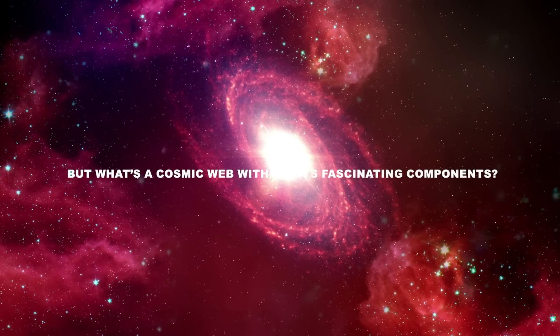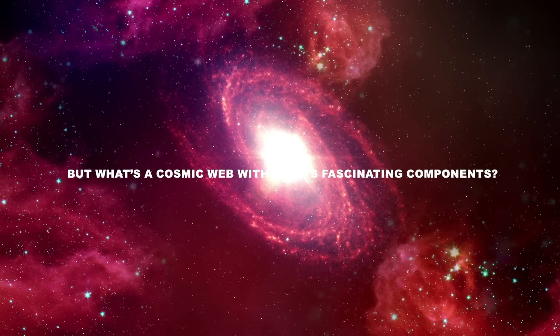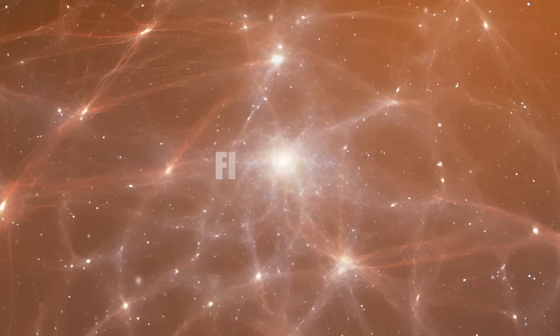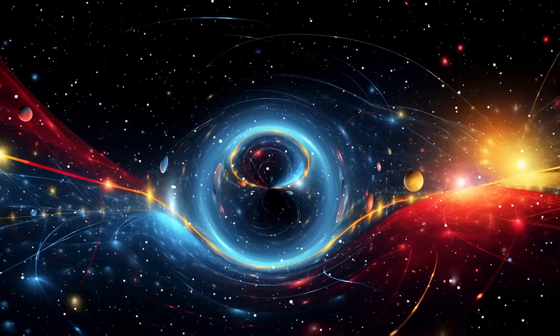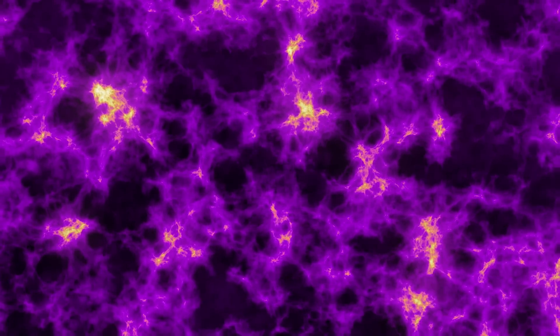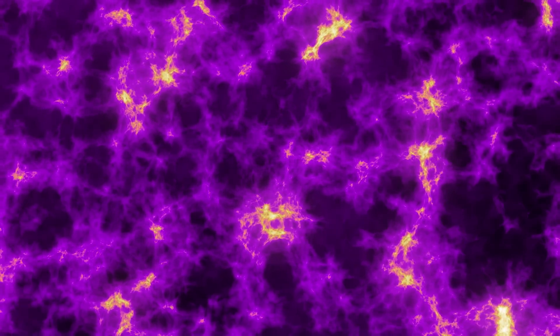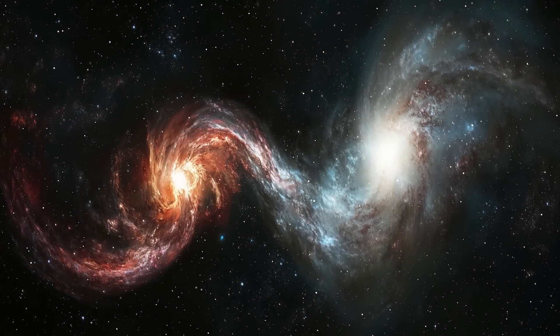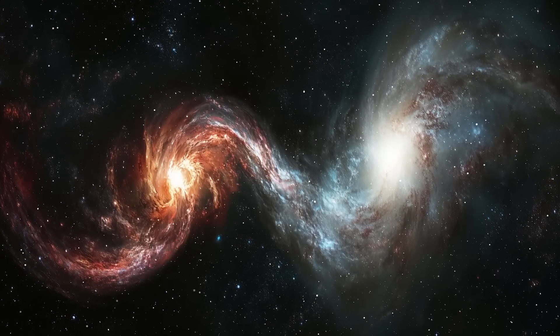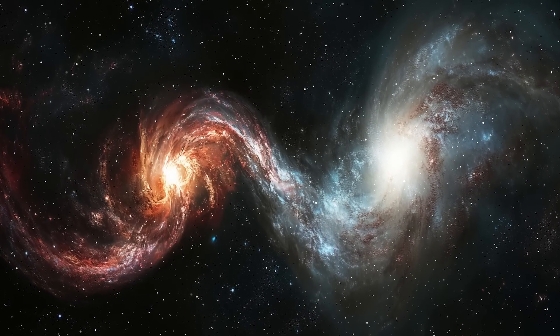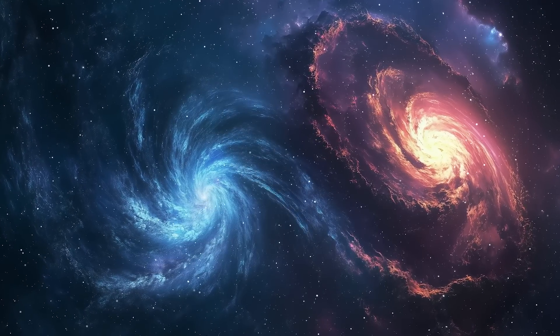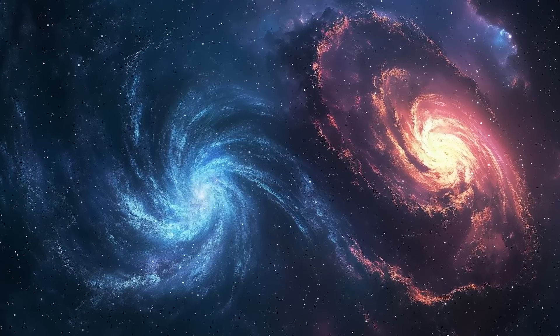But what's a cosmic web without its fascinating components? Let's dive into the building blocks: filaments, clusters, sheets and voids. Filaments are the cosmic highways where galaxies congregate along elongated structures. Imagine highways filled with traffic where cars, or in this case galaxies, are drawn together and influenced by the gravitational pull of nearby objects. These filaments are not just random strands. They are crucial pathways that shape the universe's structure.